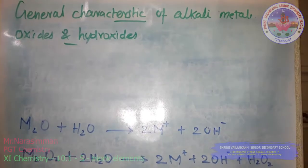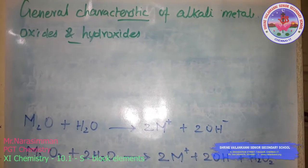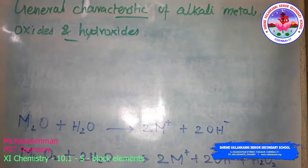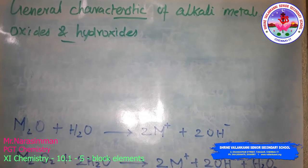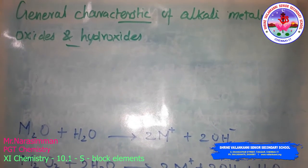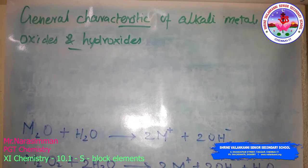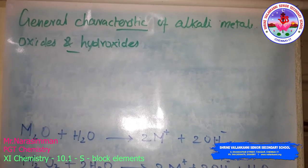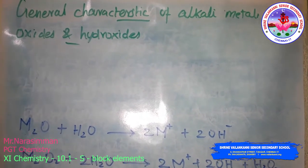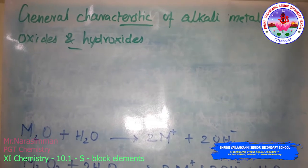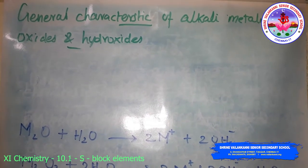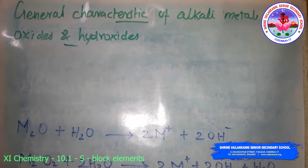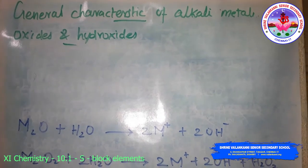General characteristics of compounds of the alkali metals. All compounds of alkali metals are generally ionic in nature. The general characteristics include oxides and hydroxides, halides, and salts of oxoacids.